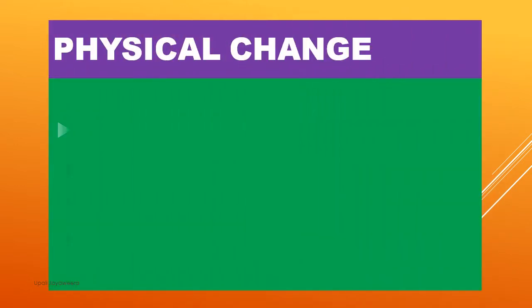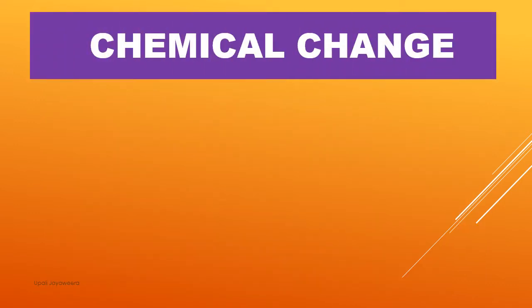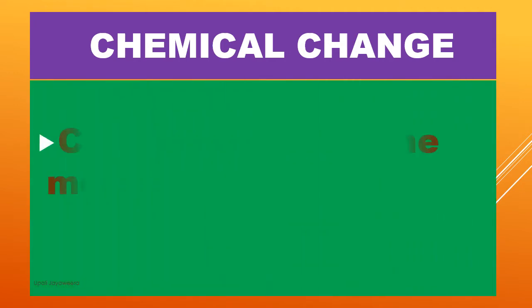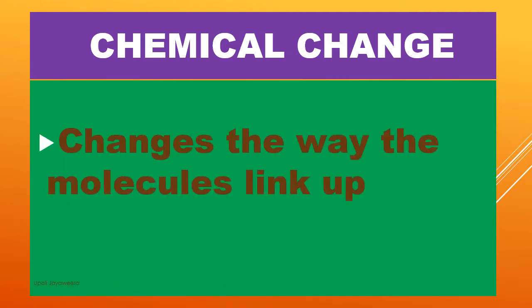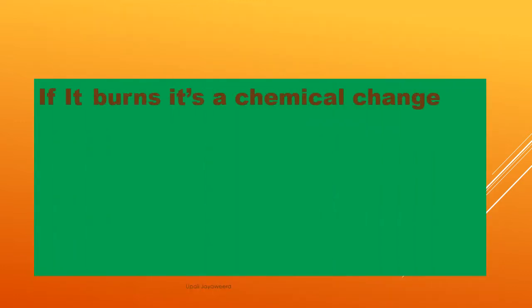In a physical change, the substance may seem different, but the way the atoms link up is the same. In a chemical change, it changes the way the molecules link up, and new substances such as water are produced.